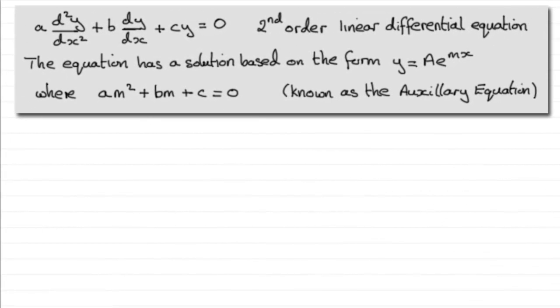Hi. Now suppose you have a differential equation like this one, a multiplied by d squared y by dx squared plus b times dy by dx plus cy equals zero, where a, b and c are constants. Then this type of equation is known as a second order linear differential equation.